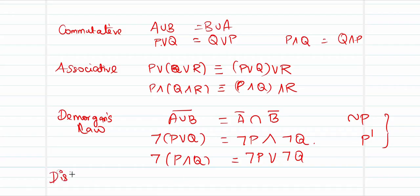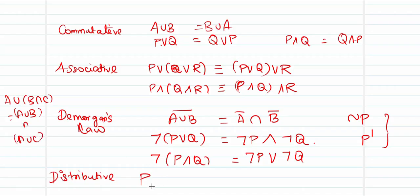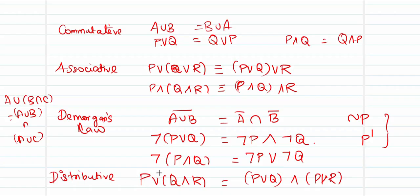The distributive law combines both ∧ and ∨. It states that A ∪ (B ∩ C) = (A ∪ B) ∩ (A ∪ C), so P ∨ (Q ∧ R) ≡ (P ∨ Q) ∧ (P ∨ R). The ∨ distributes over the quantity inside. Memorize these four formulas — commutative, associative, De Morgan, and distributive — and you will be able to comfortably solve most problems.